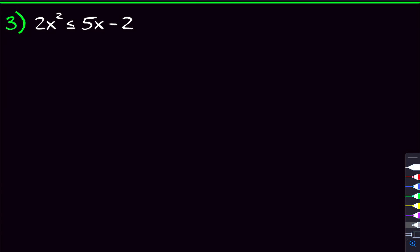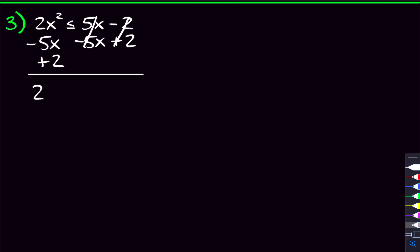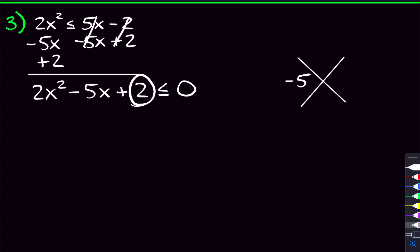Moving on to our last problem, this one gets a little tougher because now the x squared has a two in front of it. We've got to get everything to one side and have zero on the other, so let's subtract 5x on both sides and add two. When we do that, we get 2x squared minus 5x plus two is less than or equal to zero. From here we're going to factor, and because of that leading coefficient, we factor by grouping. We're looking for two numbers that add to be negative five and multiply to be two times two, which is four.